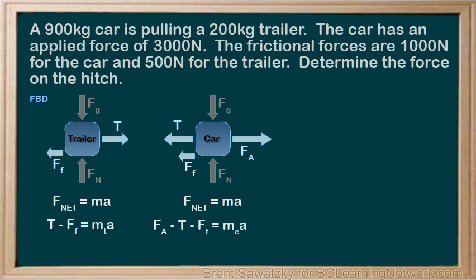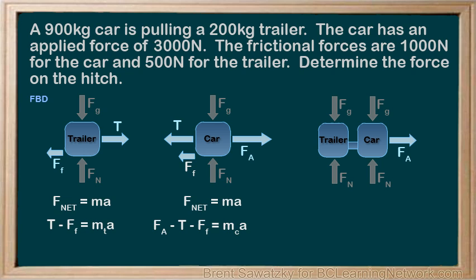The last free body diagram might not be quite as obvious, but because they're connected, we can consider both the car and the trailer as one system of masses. This system of the connected car and trailer would have the vertical forces for each. Then, horizontally, we'd have the applied force, 3,000 Newtons, and two frictional forces, the 1,000 Newtons on the car and the 500 Newtons on the trailer, in the opposite direction.